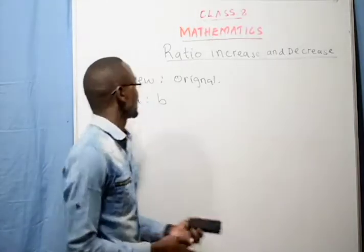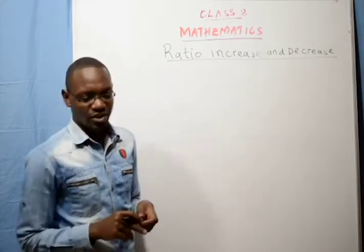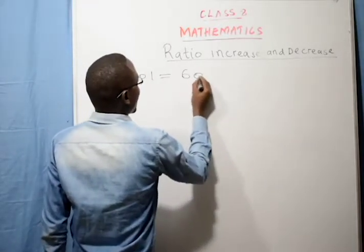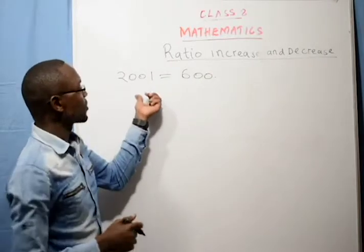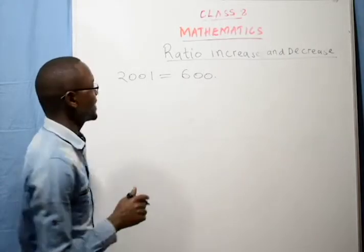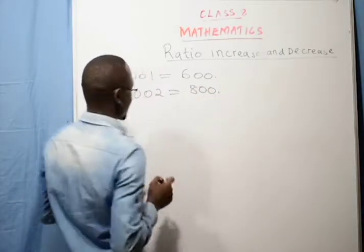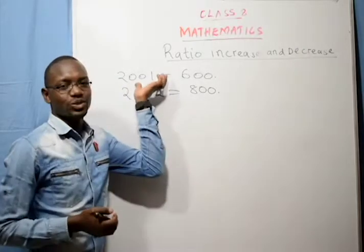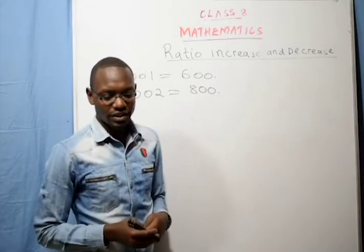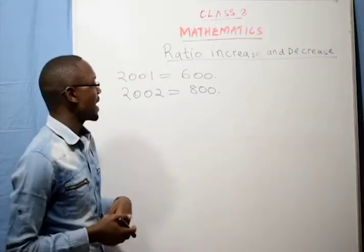For example, the number of pupils in a school in the year 2001 was 600. The number increased to 800 in the year 2002. In the year 2001, the school had 600 pupils; in the year 2002, the school had 800 pupils. The question asks: what was the ratio increase in the number of pupils?